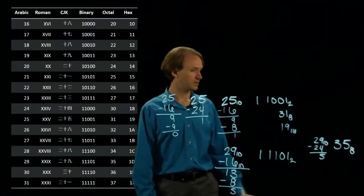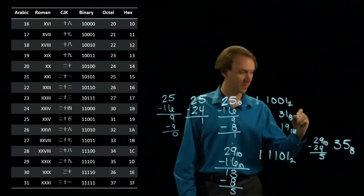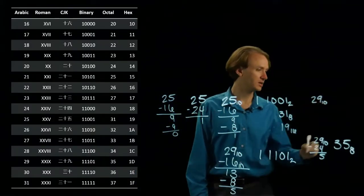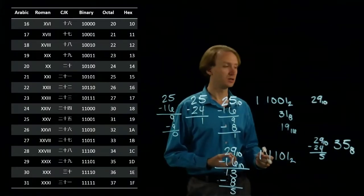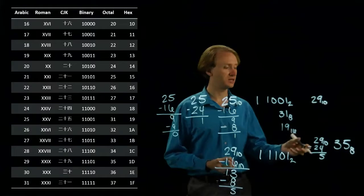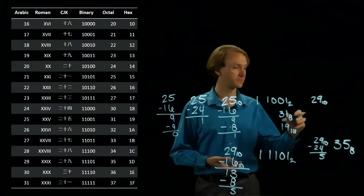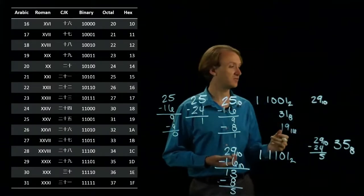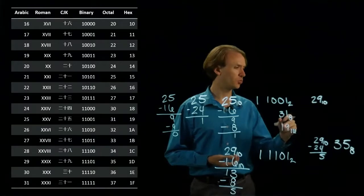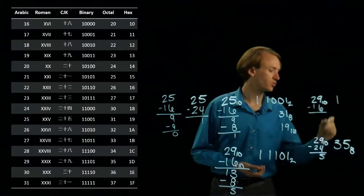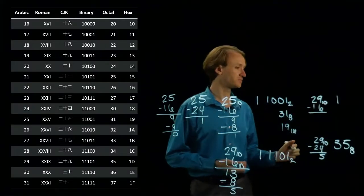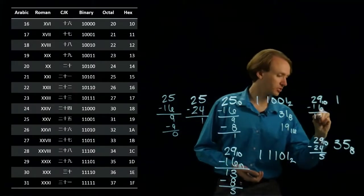And last, if I convert between 29 and base 10 and hexadecimal, I'm pulling out exponents of 16. So I'll have 1, 16, and 256. Can't pull any 256s out of here. And I can pull 1 sixteen out. So I'll subtract 16. Write down a 1 for my 16's position. That'll leave me with 13.